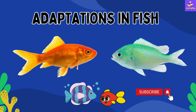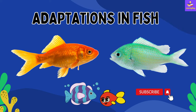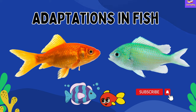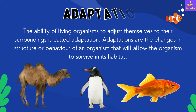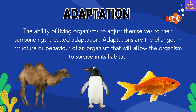In this video, we are going to talk about the adaptations in fish. First of all, let us understand what is the meaning of adaptation. The ability of living organisms to adjust themselves according to their surroundings is called adaptation. Adaptations are the changes in structure or behavior of an organism that will allow that organism to survive in its habitat.